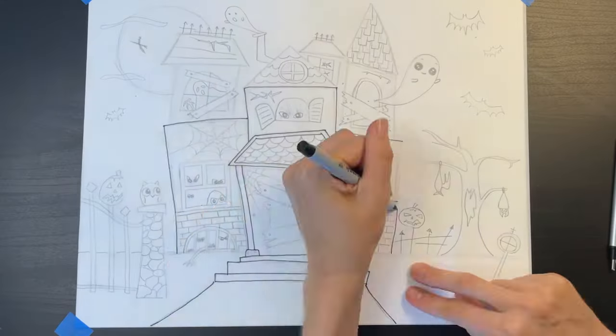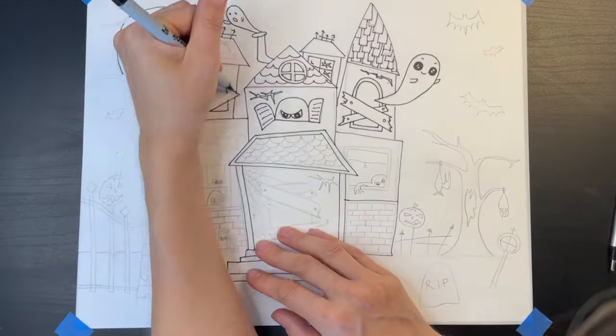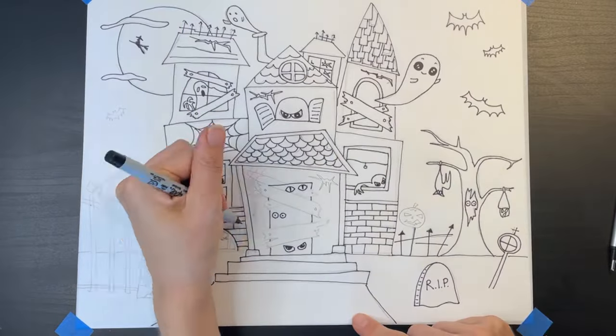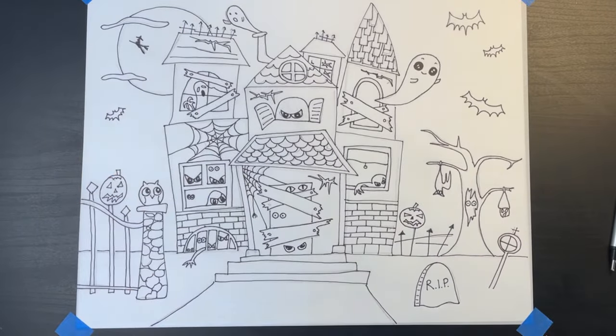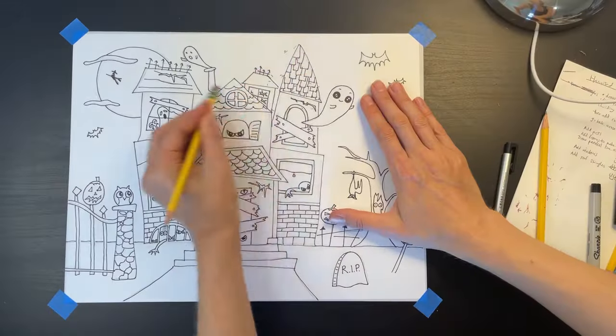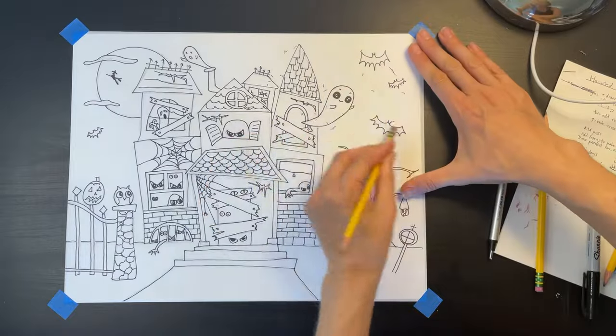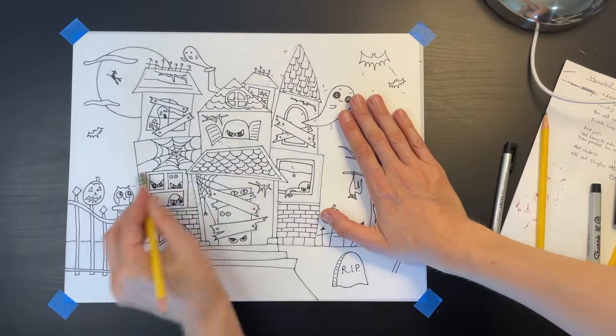Now I'm going to outline my drawing with an ultra fine sharpie so you can see it better. I love this part it looks so cool. If you outline your drawing in ultra fine sharpie you will want to go back afterwards and erase your pencil marks.